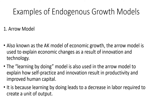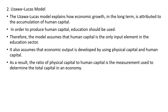There are different versions of endogenous growth models. Starting with the Arrow model, also known as the AKA model of economic growth, this model explains economic changes as a result of innovation as well as technology. The learning-by-doing model is used in the Arrow model to explain how self-practice and innovation result in productivity as well as improved human capital, since learning by doing leads to a decrease in labor required to create a unit of output.